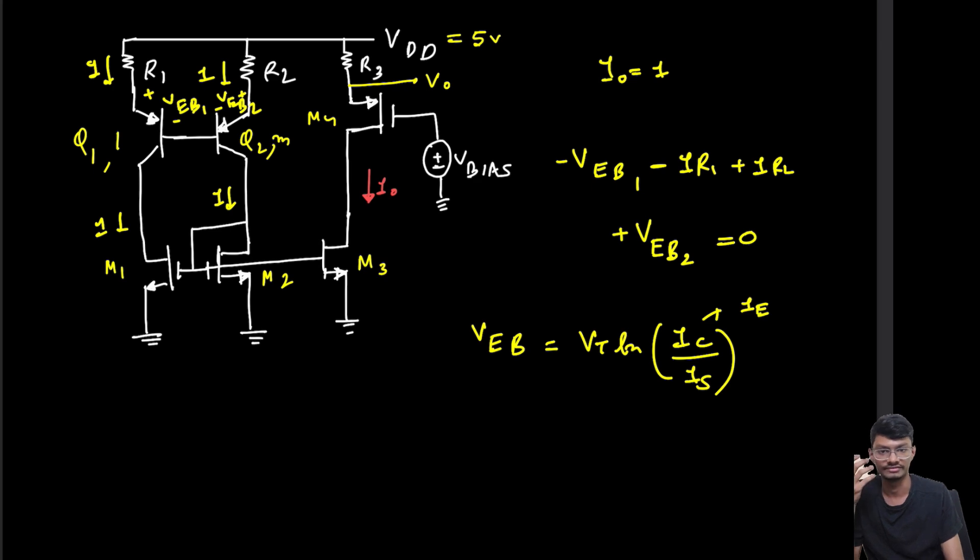Now we can write this equation. Also, one thing we know is this reverse saturation current Is is directly proportional to the emitter area. So in case of transistor 1, Is1 is basically A1.